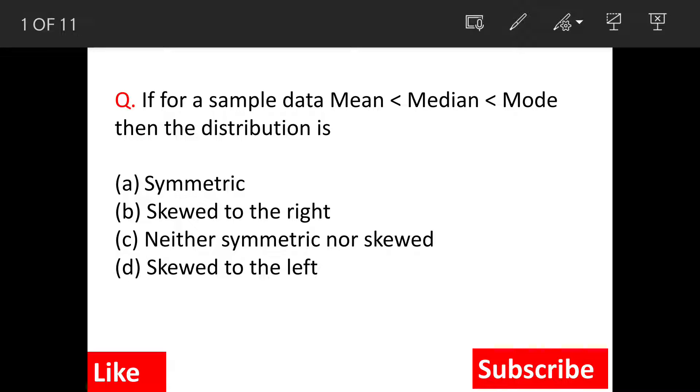We have a question on statistics. The question says if mean is less than median and median is less than mode, then the distribution is: symmetric, skewed to the right, neither symmetric nor skewed, or skewed to the left.